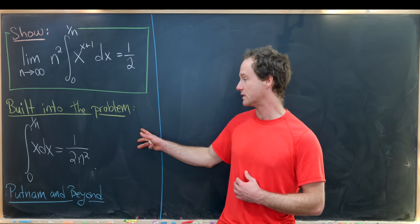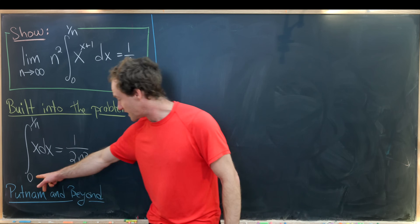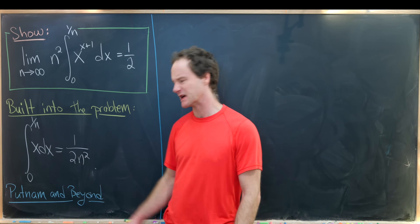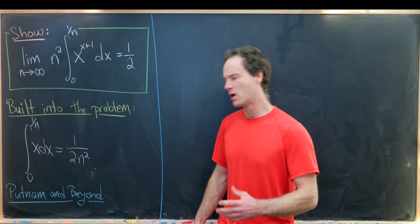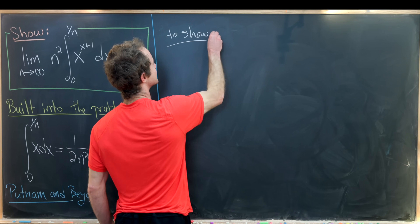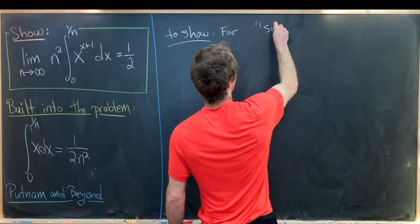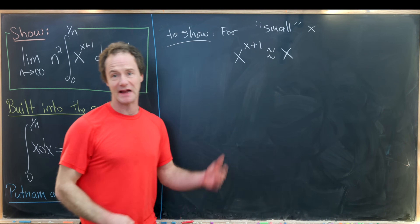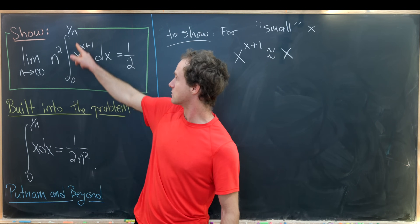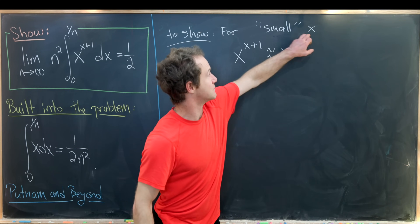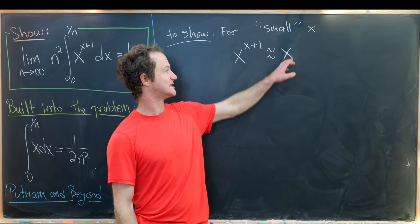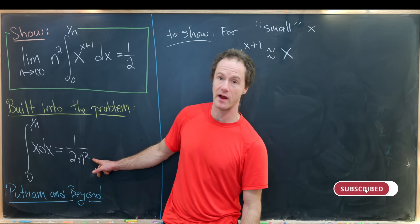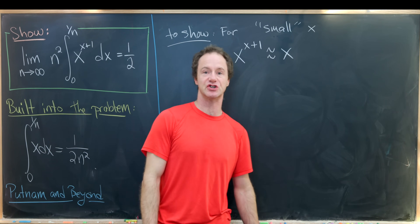Immediately we can see a hint built into the problem: the integral from 0 to 1/n of x dx is very clearly 1/(2n²), just by the fundamental theorem of calculus. So what we'd like to show is that for small values of x, x^(x+1) looks a lot like just x. When integrating from 0 to 1/n we're only over very small x values, so integrating x^(x+1) is essentially the same as integrating x, giving us 1/(2n²). The n² cancels and we're left with 1/2.